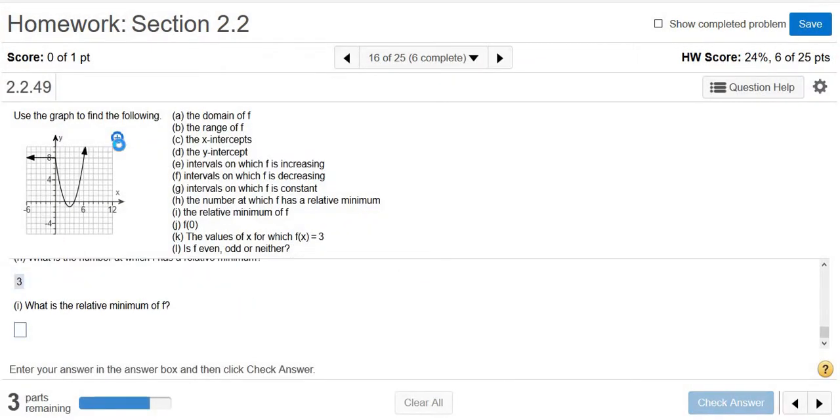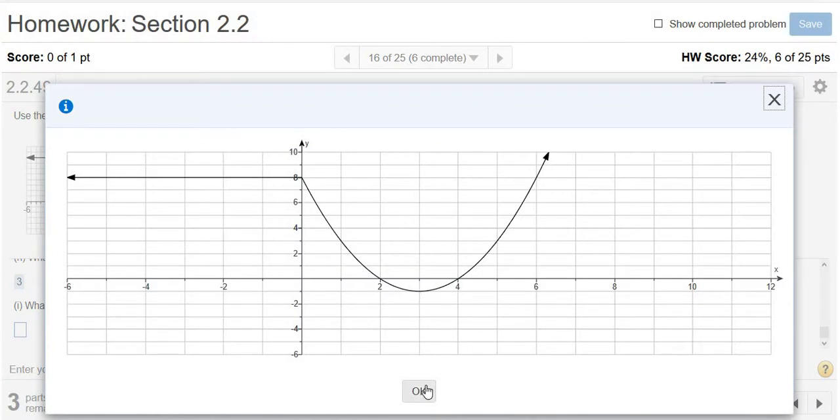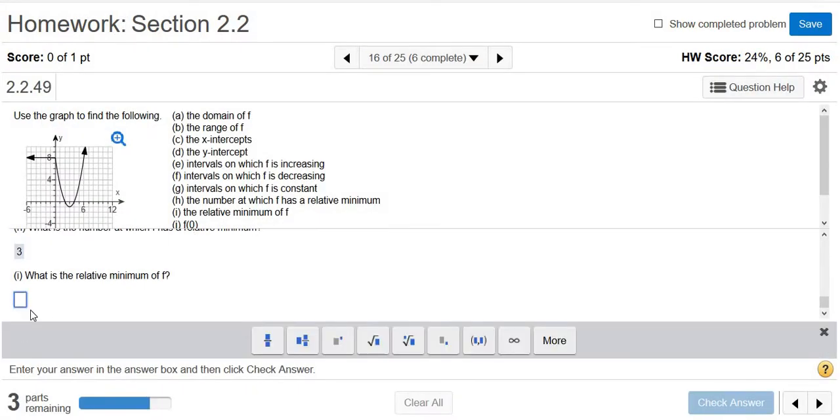Then it says the relative minimum—well, we know that's going to be negative 1. That's the smallest y-value in that area. So negative 1 is the relative minimum.